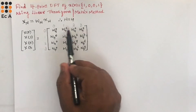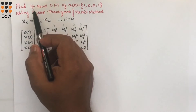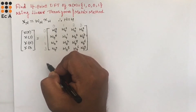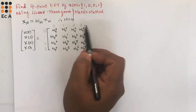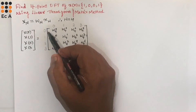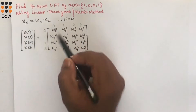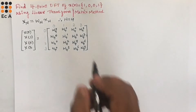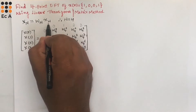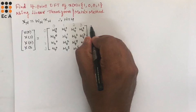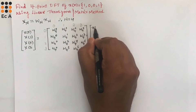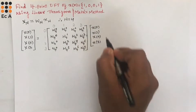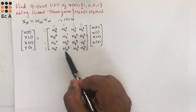If they give a 6-point DFT, you take indices 0 to 5 along rows and columns. If they give an 8-point DFT, write 0 to 7, multiply those values, and find the power of W. Next, we write the 4×1 input matrix x[0], x[1], x[2], x[3], and we need to find all the twiddle factor values. There are two methods.